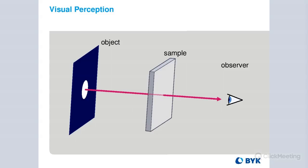Visual perception, as mentioned, is a little different from pretty much every other instrument we make and sell. For all of our other instruments — the color instruments, the gloss, the wave scan, the surface structure — they're all reflectance measurements. We're bouncing light off of the surface, and then that reflected light is going into our eye and we're seeing whatever happened to that reflected light.